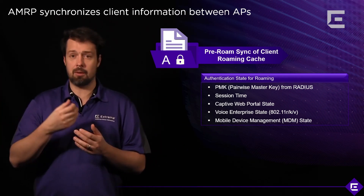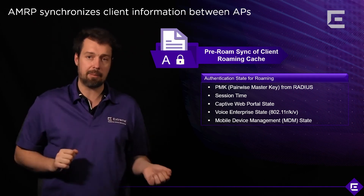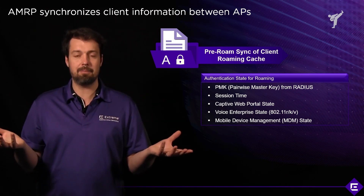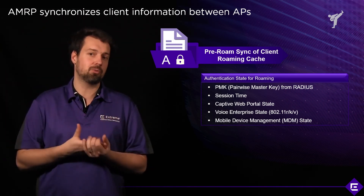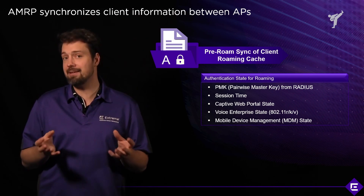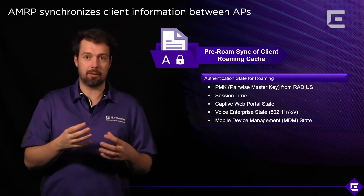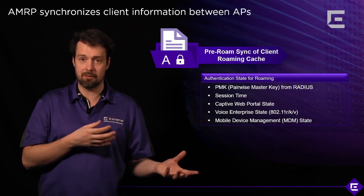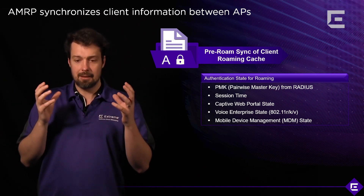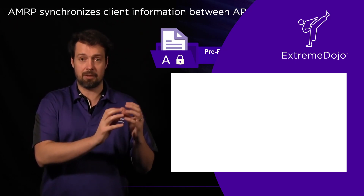The captive web portal state information allows seamless captive portal authentication. For example, a guest user authenticates on the third floor, closes their laptop, and an hour later logs in on the second floor — they can bypass the portal because the AP downstairs already knows them via AMRP. For MDM integration, the cache also stores MDM state — whether the device is compliant or needs to be redirected to a quarantine or isolation VLAN. All of this is shared within the client roaming cache, and AMRP is the protocol used to exchange that information between access points.